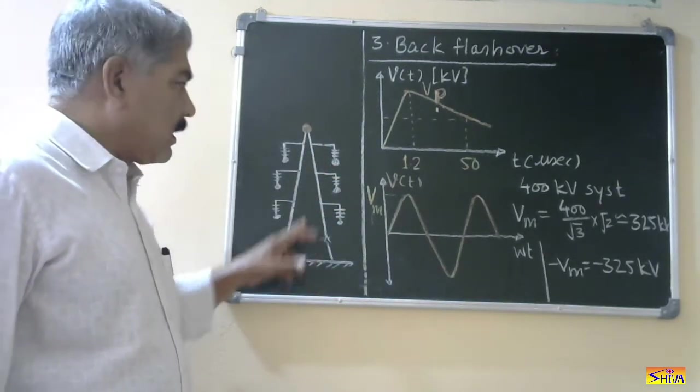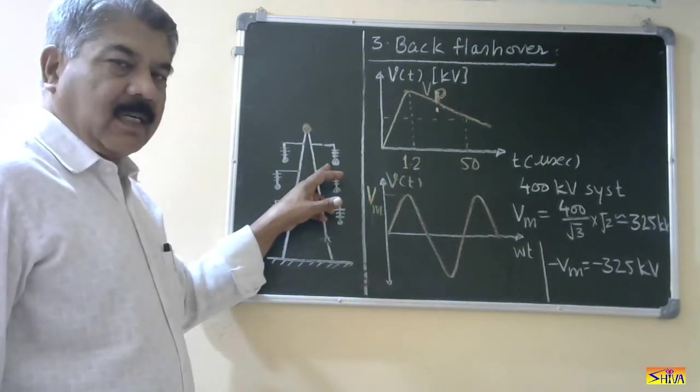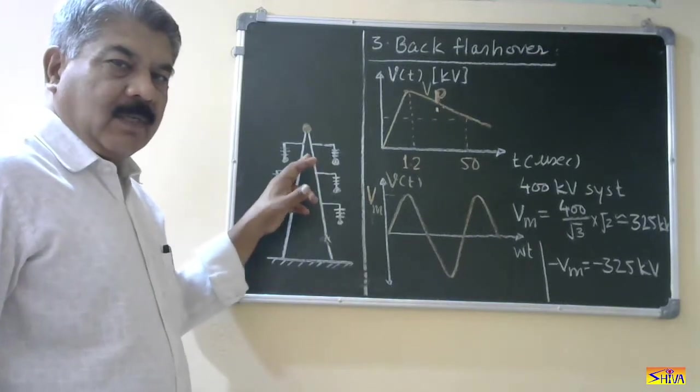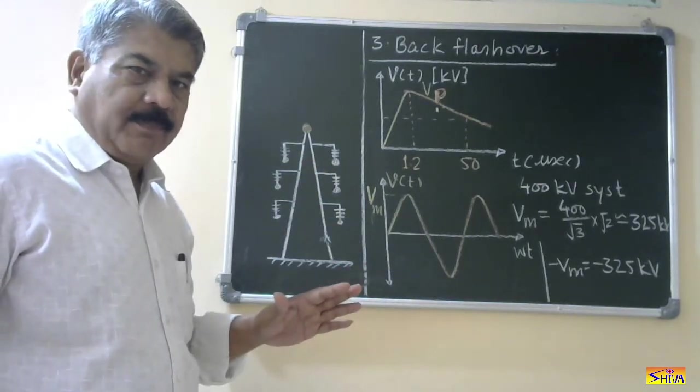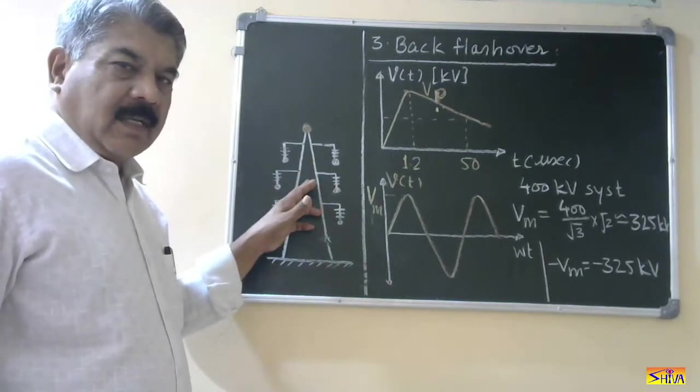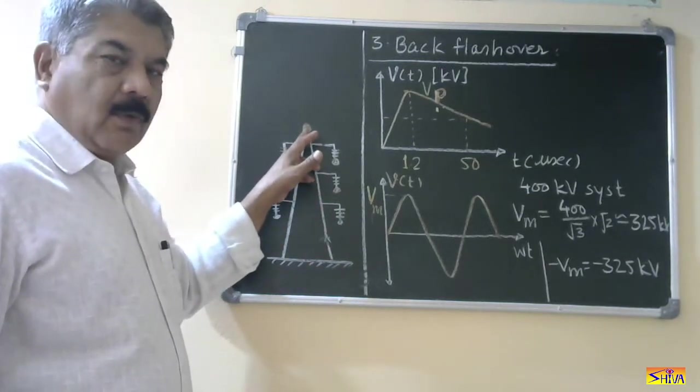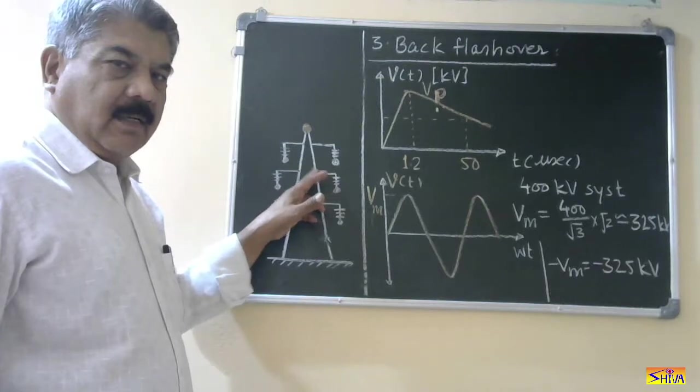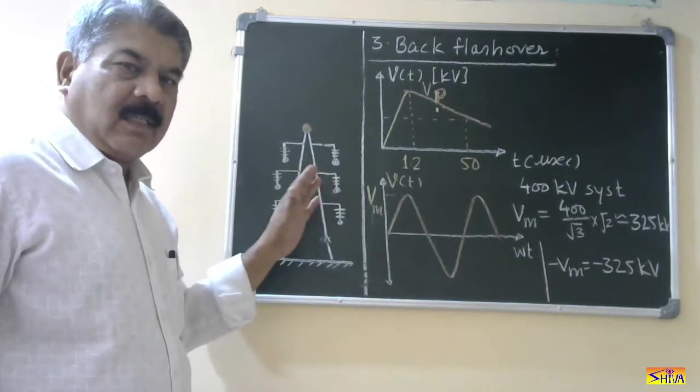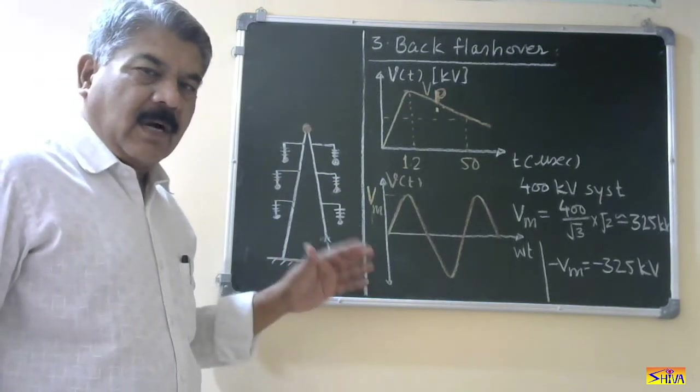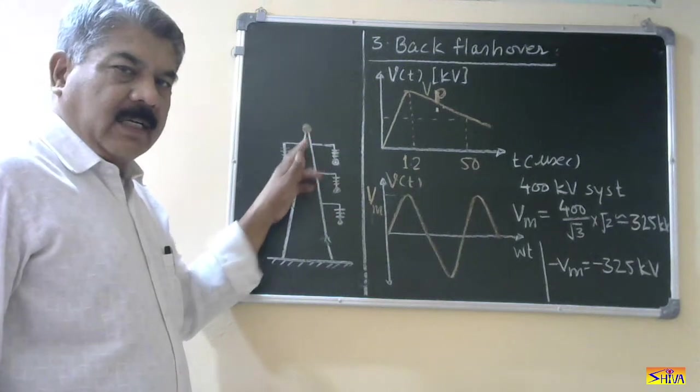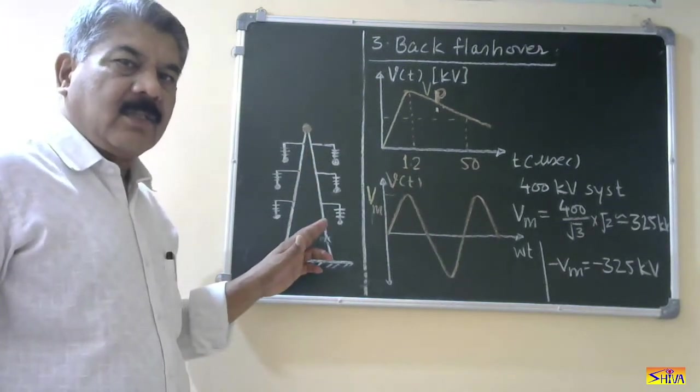So if flashover occurs from this power conductor to the ground conductor or to the tower we say that it is normal flashover. Backflashover means the flashover is occurring from ground conductor to this power conductor or from tower to this power conductor. That is process is reverse. Now let us see how it happens because under normal conditions this ground conductor and this tower is at zero potential.